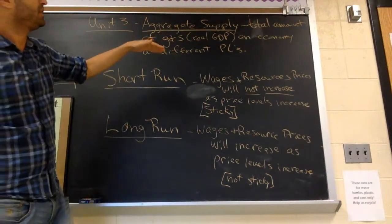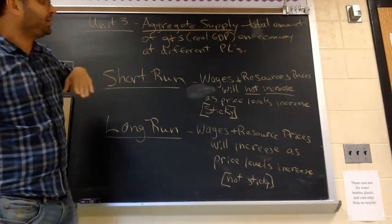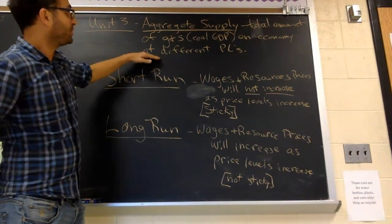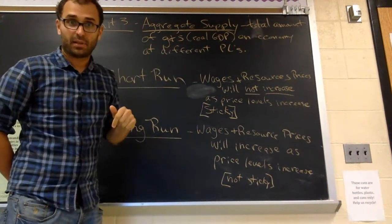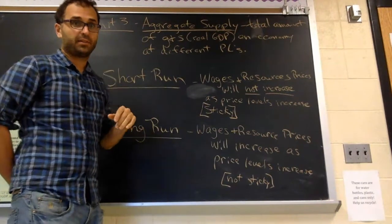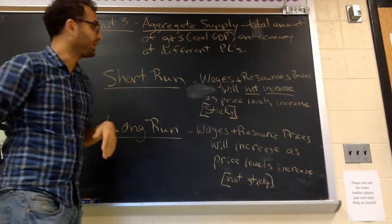The total amount of goods and services, or real GDP, total amount of real GDP an economy produces at different price levels. Total amount of goods and services an economy produces at different price levels.